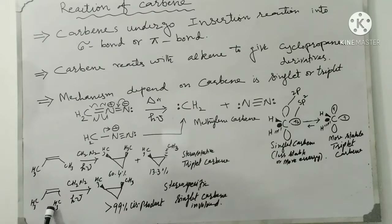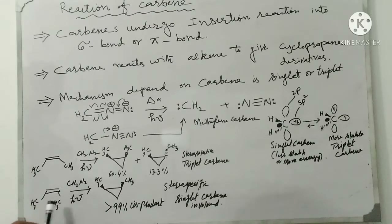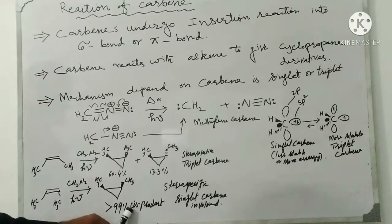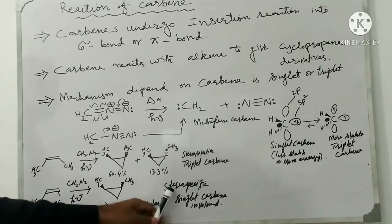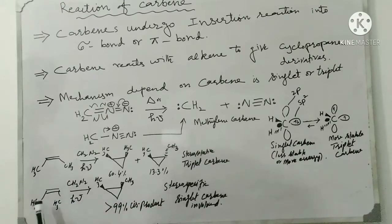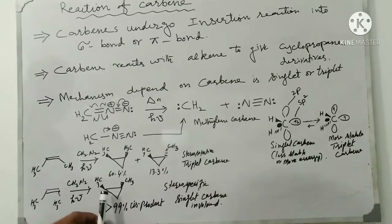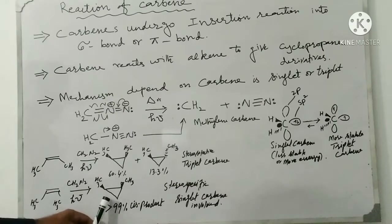When it gives exclusively cis product at 99%, the singlet carbene is involved, because the reaction is now stereospecific. The stereochemistry of the 2-butene is cis, and the product formed is also cis. This confirms singlet carbene participation.